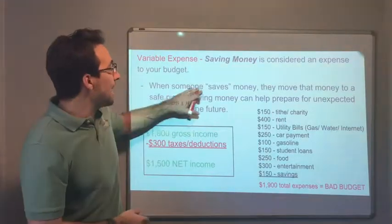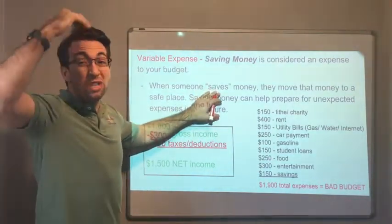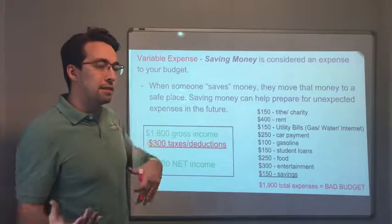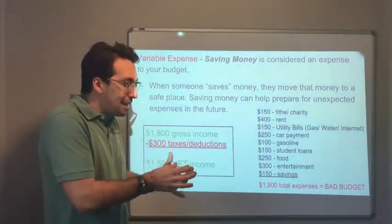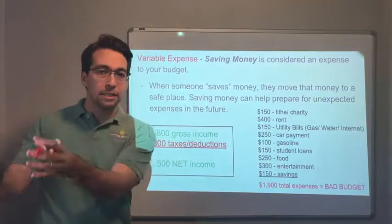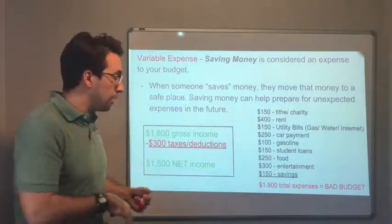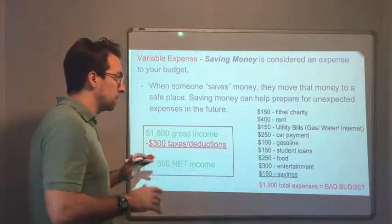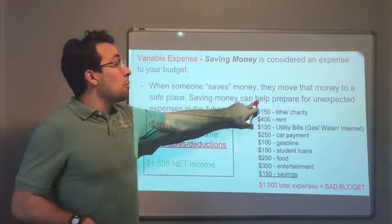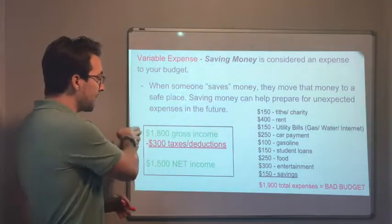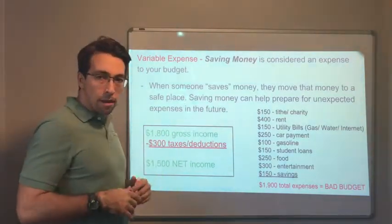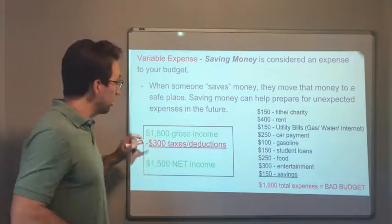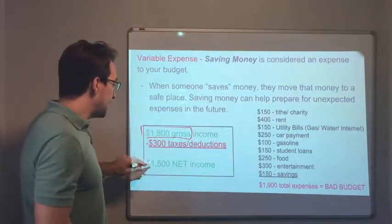Here's an example of a budget. An important thing to remember: when you save money, that's considered an expense. You move money from your checking account into a savings account — it leaves the account, so it counts as an expense in your budget. Saving money helps prepare for unexpected expenses in the future. In this example, the gross income is $1,800 per month, with $300 in taxes and deductions.